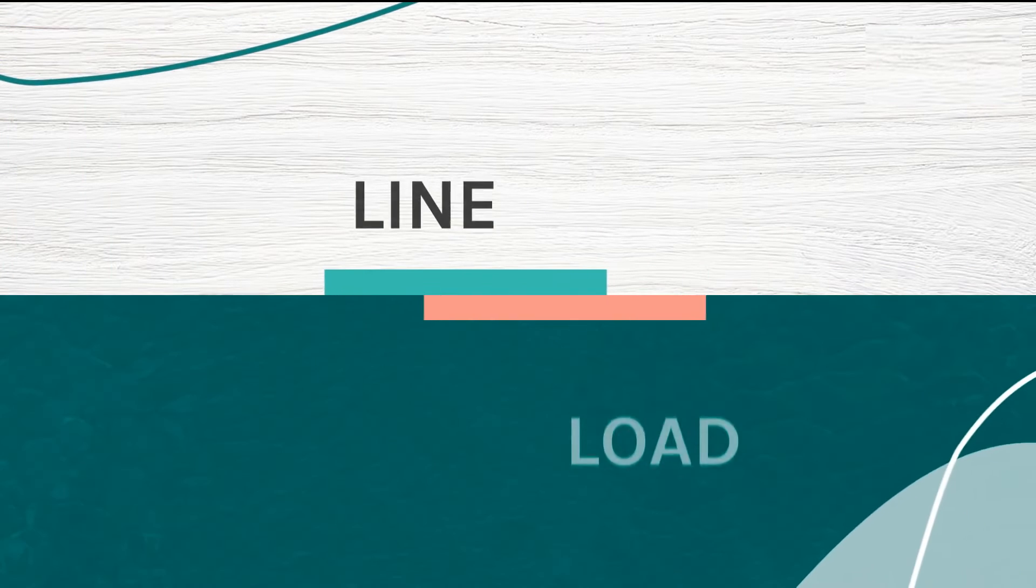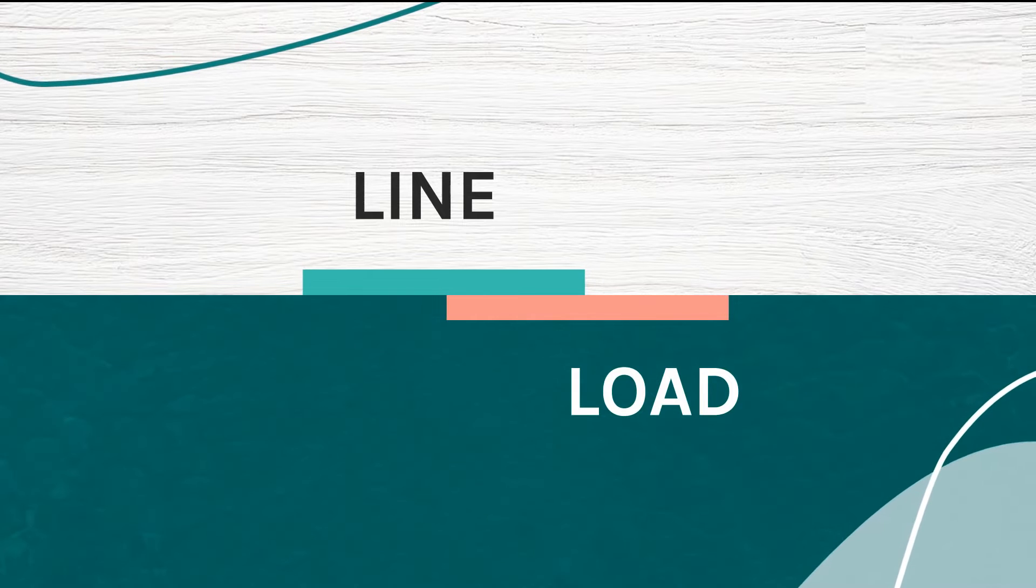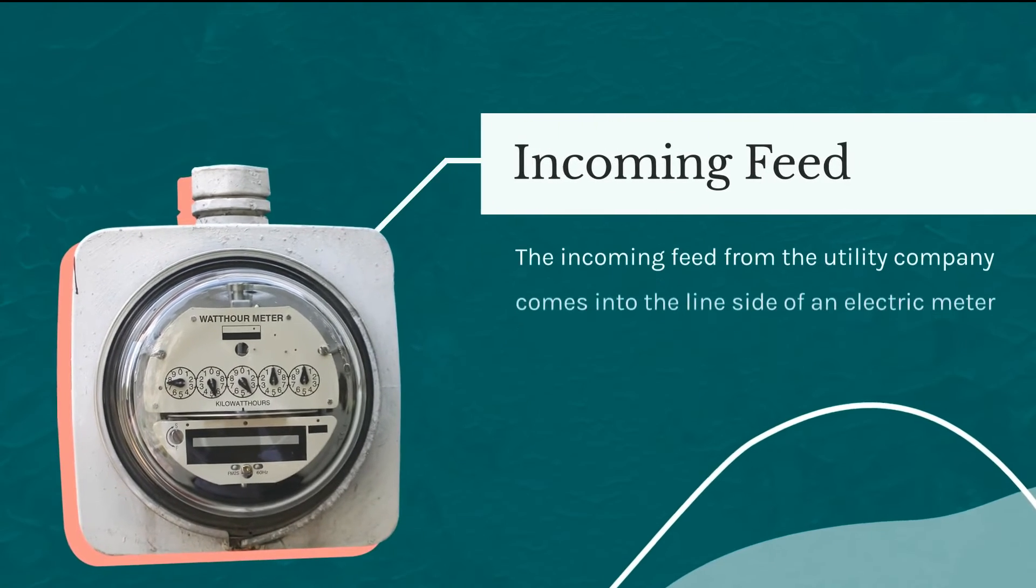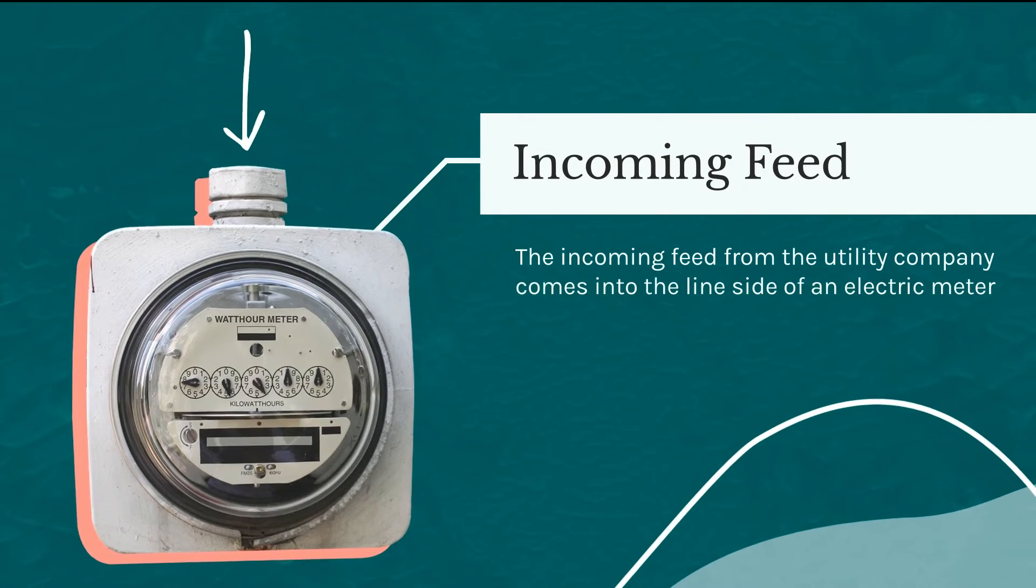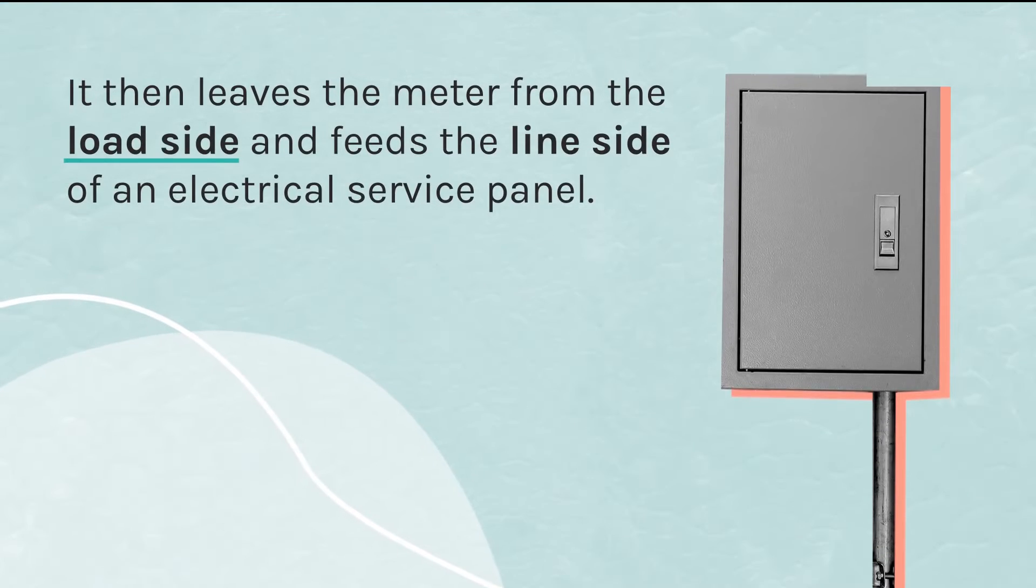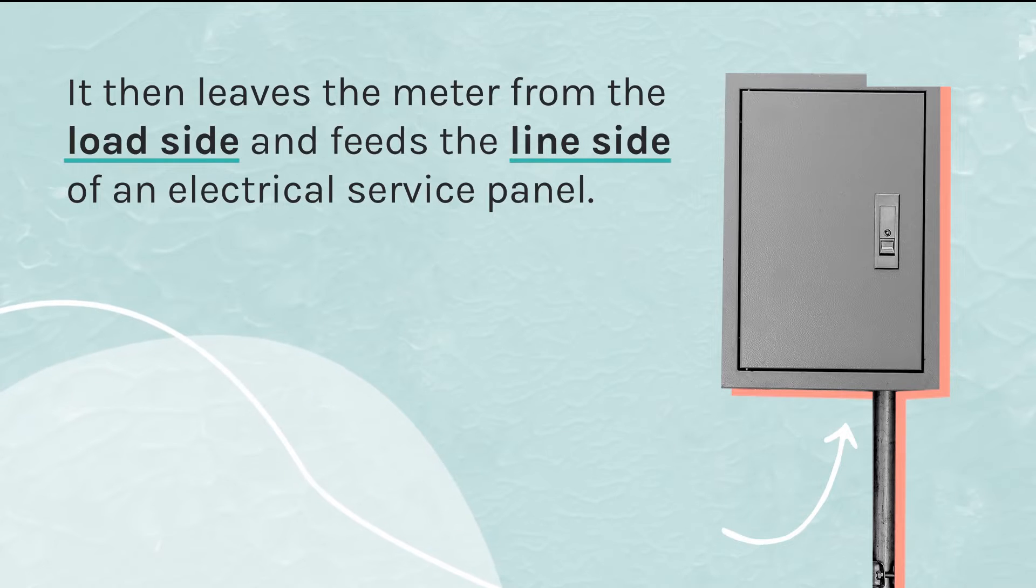The terms line and load have a number of applications at different locations in an electrical system. The incoming feed from the utility company comes into the line side of an electric meter. It then leaves the meter from the load side and feeds the line side of an electrical service panel.